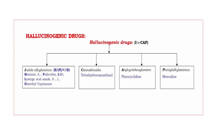Hallucinogenic drugs — these are the drugs that produce hallucinogens. When we come to the classification, these are divided into four groups. The mnemonic is ICAP: I means Indole alkyl amines, C means Cannabinoids, A means Arylcyclohexyl amines, and P means Phenyl alkyl amines.